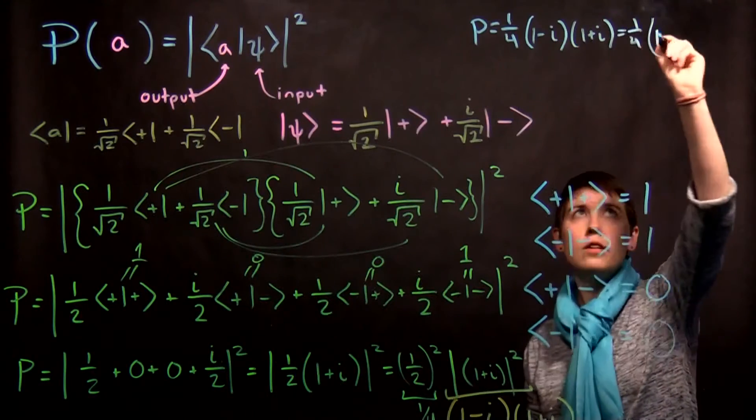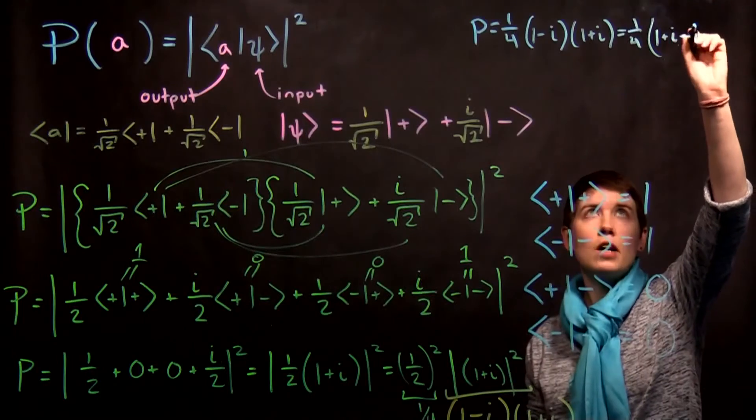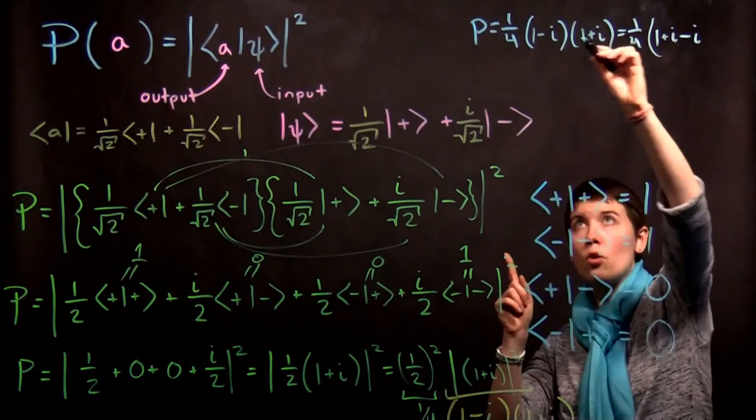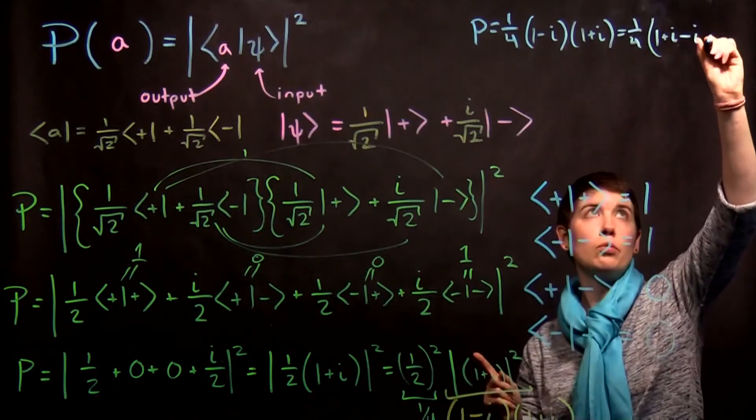We have one plus i and then minus i. And then this last term is i times i is negative one with another negative one. So plus one.